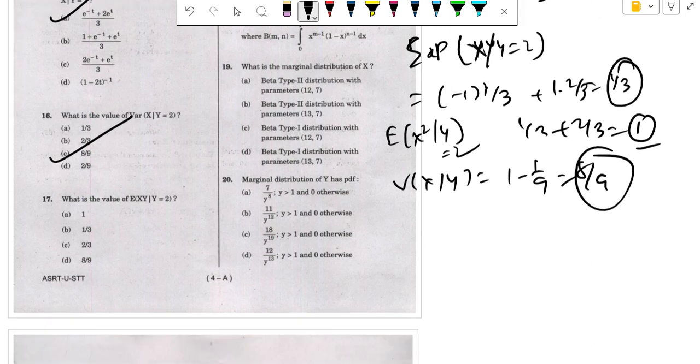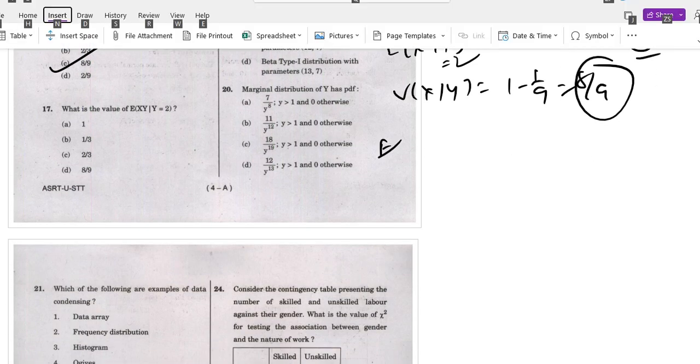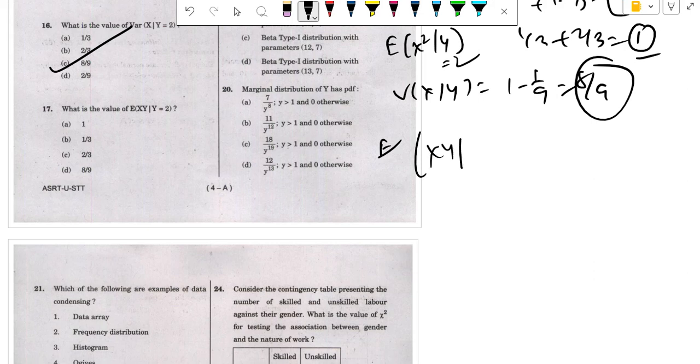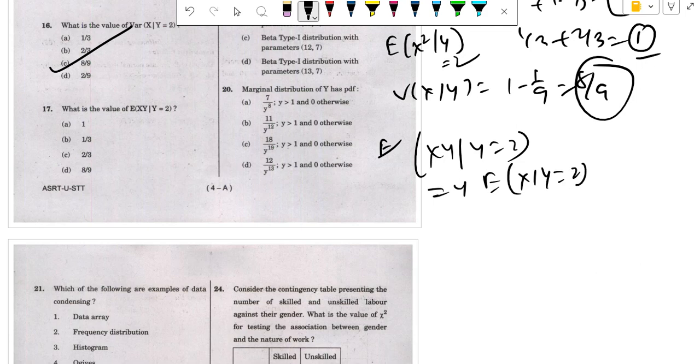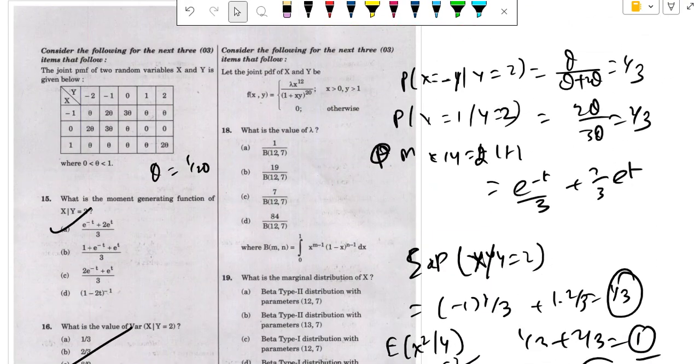Next is question 17. E(xy | y = 2), so y times E(x | y = 2), so 2 times 1/3 equals 2/3. Question 17's answer is C, and the next questions we will solve in another video.